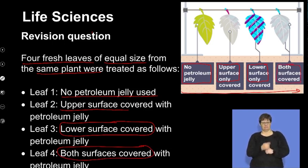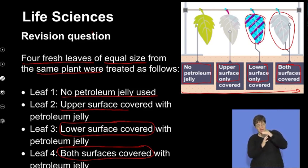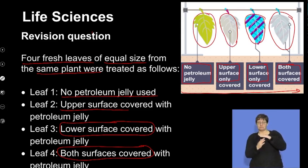Now you might think, what will putting petroleum jelly or Vaseline on a leaf, how will that affect anything? The important thing to remember is petroleum jelly will not let air or water pass through it. Basically, in this leaf we are sealing the leaf. We are blocking the stomata so nothing can get in and out of the plant. In this one, we are blocking only the stomata on the lower surface. Here we are blocking the stomata on the upper surface. And here there is no blockage of the stomata at all.